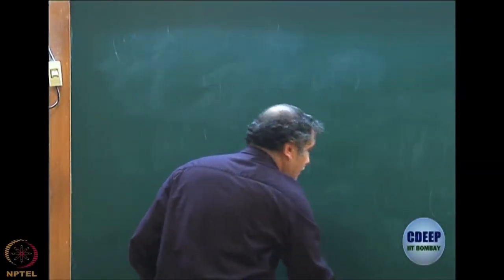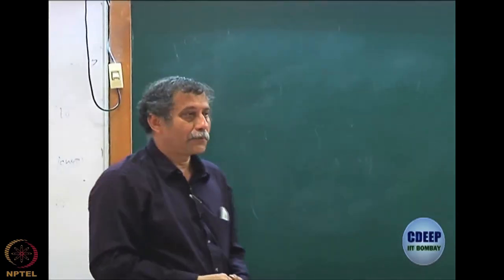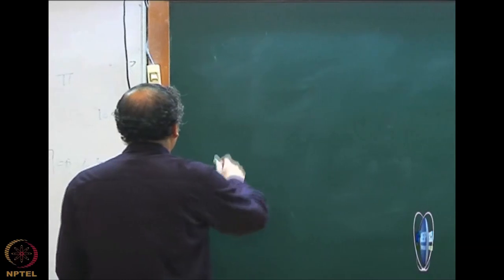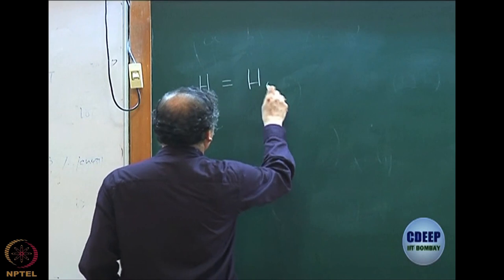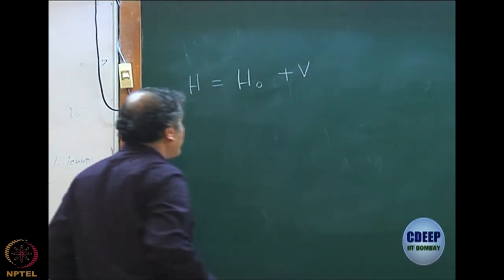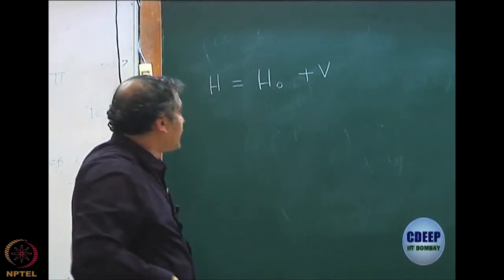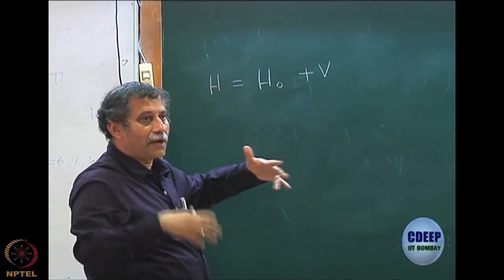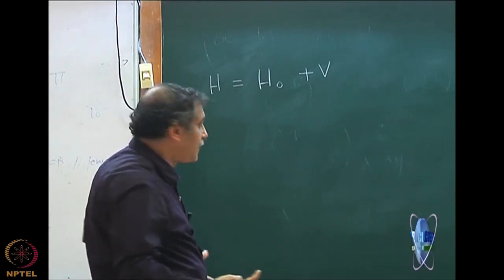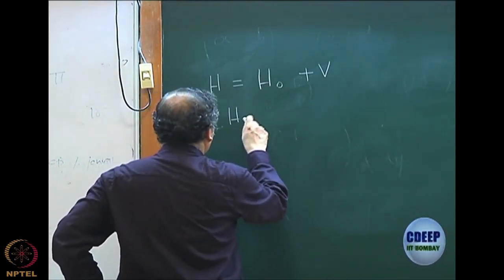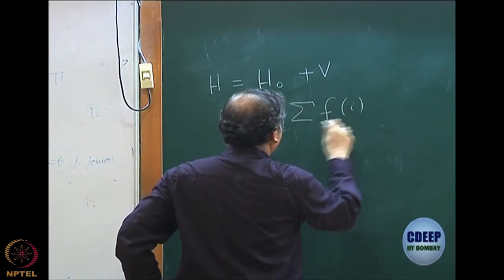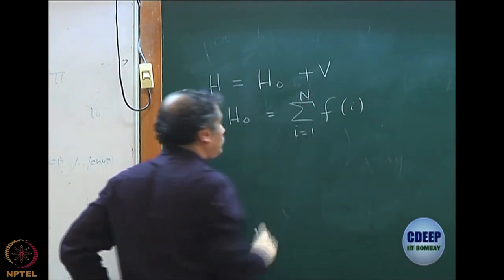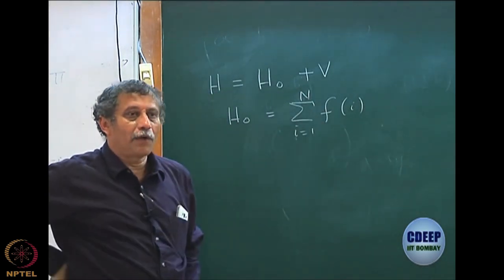Let me go back to the perturbation theory that we discussed. There are several issues which I have to repeat again. First of all, we said that to start the perturbation theory, we wrote H as H₀ plus V, and we made sure that Ψ_HartreeFock is the ground state eigenstate of H₀, because that was our idea of starting the perturbation theory. So we said that H₀ is an n-particle operator which is a sum of the Fock operator.